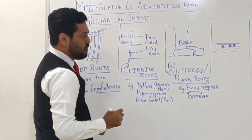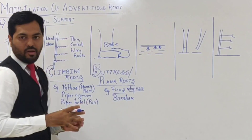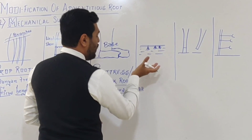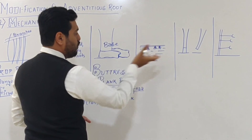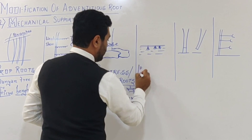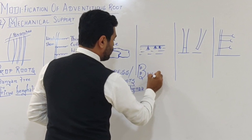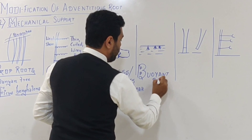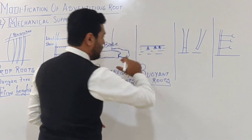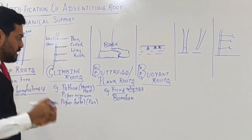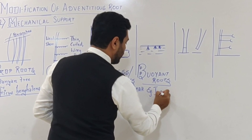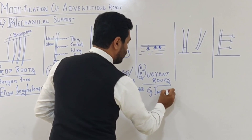The next type of root is seen in aquatic plants where the roots help the plant float in water. This is known as beyond roots (floating roots). Beyond roots also provide a kind of mechanical support so that the aquatic plant can float in water. An important example to remember is Juscia, which is a plant that shows beyond roots.